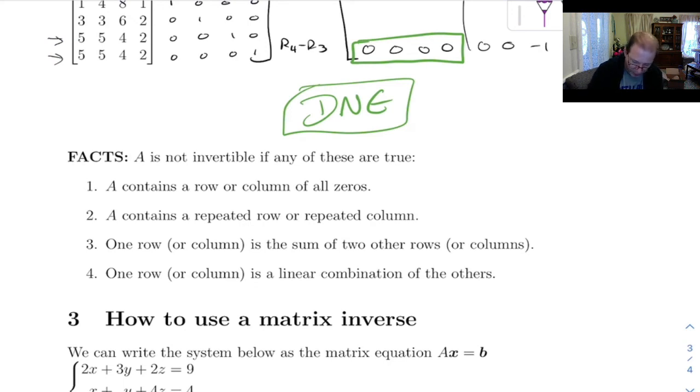If one row or column is the sum of two other rows or columns, then it doesn't have an inverse. And also, if one row or column is a linear combination of the others. In other words, if you could add some multiples of the rows together and get one of the other rows, that would not have an inverse.